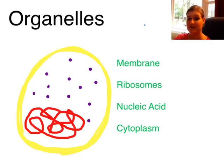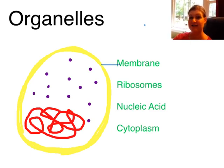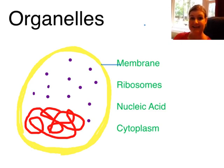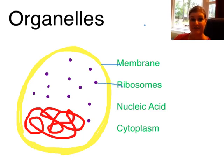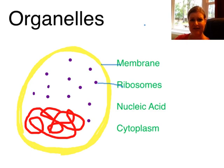The ones you need to know about today: the outer layer, which we call the membrane, represented by this yellow thick line right here. The membrane is responsible for regulating what can enter and leave the cell, and it's made up of lipids or fats — one of the biomolecules that you either will be learning about or have just learned about, depending on where you are in your class.